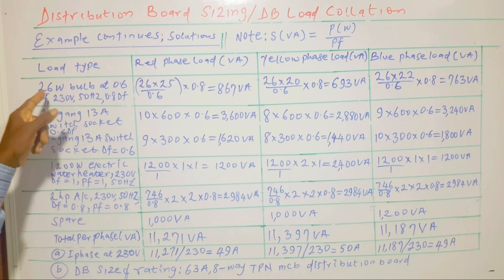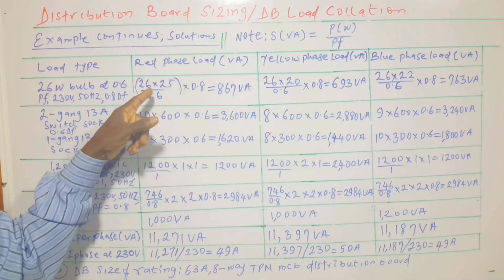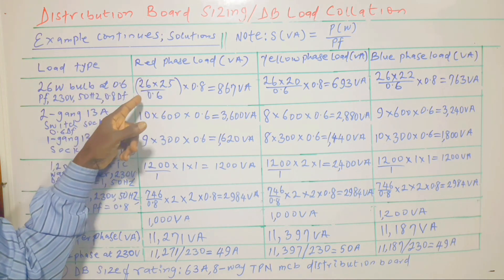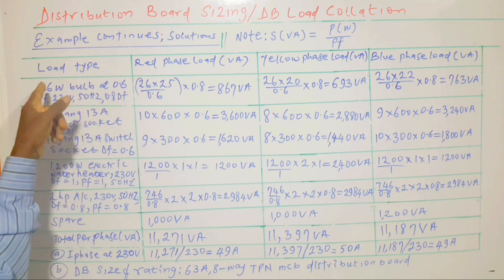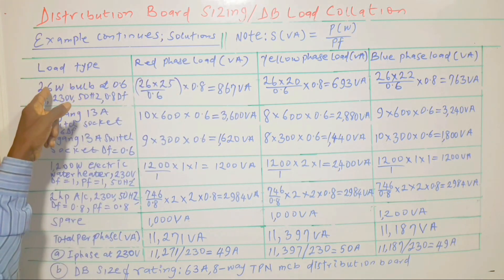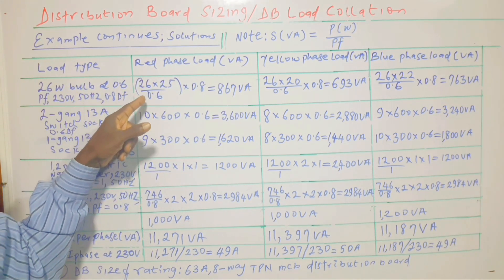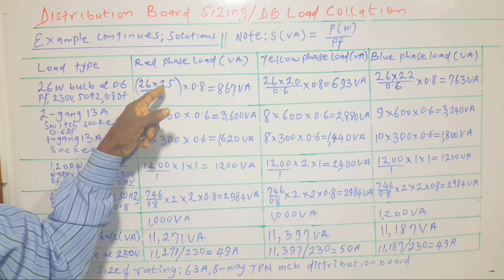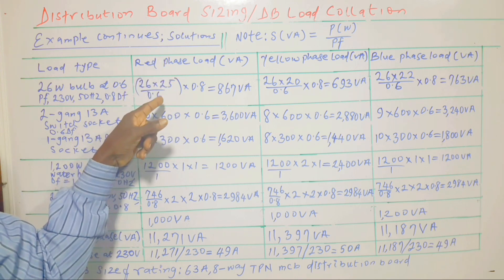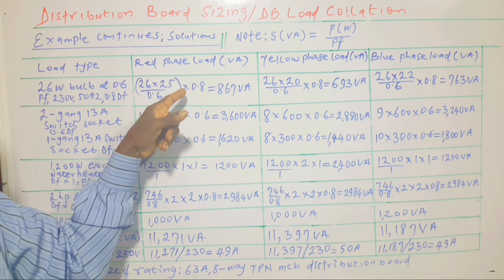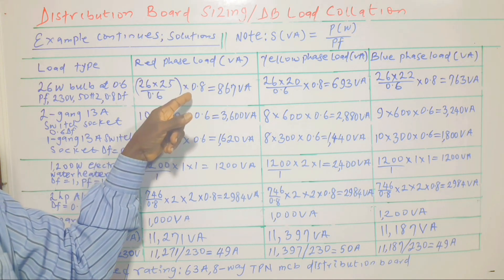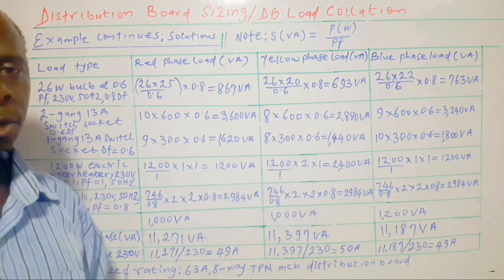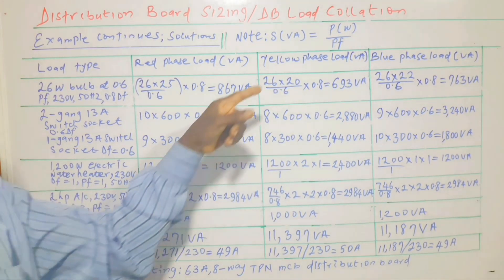For instance, the bulbs: on the red phase we have 25 bulbs, each rated 26 watts. So what is important is to convert 26 watts to VA — divide 26 watts by the power factor — and that gives us the VA, which is then multiplied by the number of electric bulbs on the red phase. Then we multiply the result by 0.8, which is the diversity factor. The same thing holds for electric bulbs on other phases.